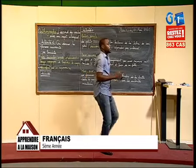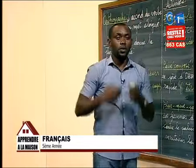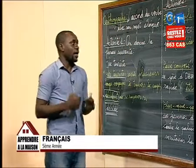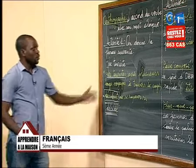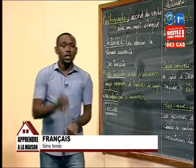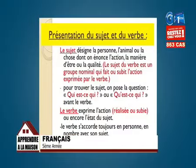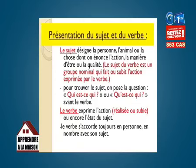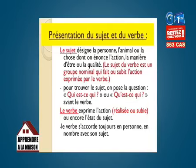L'accord du verbe avec son sujet éloigné. L'objectif du travail qu'on fera aujourd'hui, c'est de comprendre comment accorder le verbe avec un sujet éloigné dans la phrase. Mais avant de comprendre comment accorder le verbe avec son sujet éloigné, il faut d'abord qu'ensemble nous puissions présenter le sujet et le verbe. Qu'est-ce qu'on entend par sujet ? Qu'est-ce qu'on entend par verbe ? Le sujet désigne la personne, l'animal ou la chose dont on énonce l'action, la manière d'être ou la qualité.